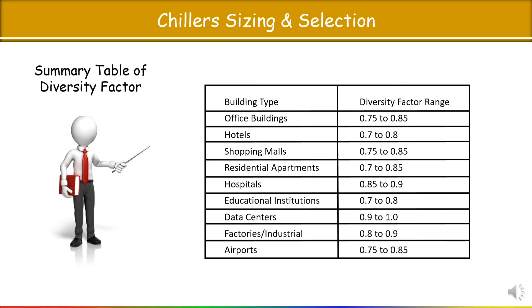Here is a summary table for diversity factor by building type. For an office building, the diversity factor range is 0.75 to 0.85. For a hotel building, a different range applies. The diversity factor ranges between 0.7 to 0.9 overall. The exact value depends on your building type — residential apartment, hospital, etc. Understanding the diversity factor is very important.